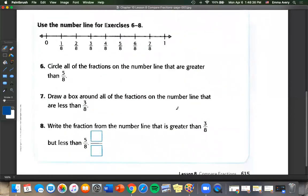So we're going to use this number line. Circle all the fractions on the number line that are greater than five eighths. So we're going to circle five eighths, six eighths is bigger, seven eighths is bigger, and one is bigger.